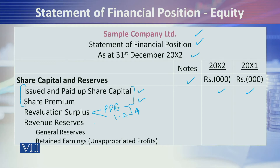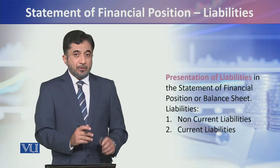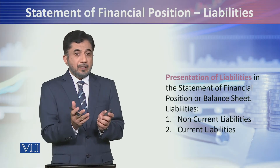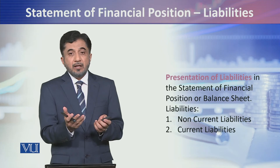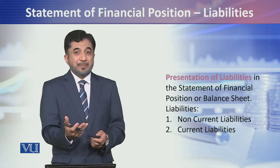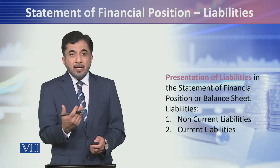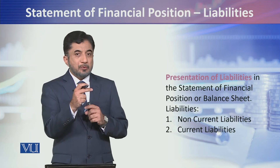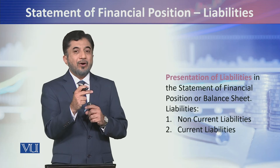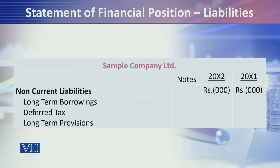In revenue reserves, general reserve and retained earnings come in. So in this way, you are presenting capital and reserves. Now when it comes to the liabilities part — because after share capital and reserves we also present liabilities — liabilities are also a claim on the resources by the lenders and creditors. This claim is also divided into two parts: non-current liabilities and current liabilities.